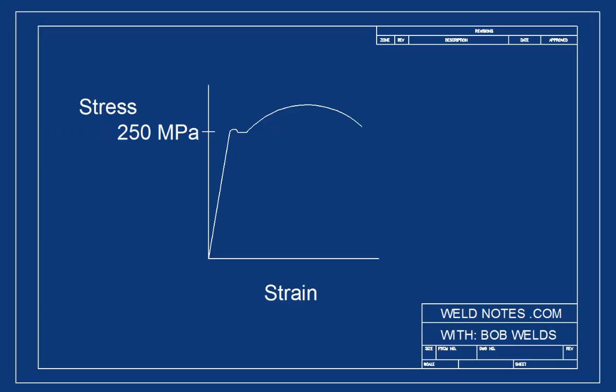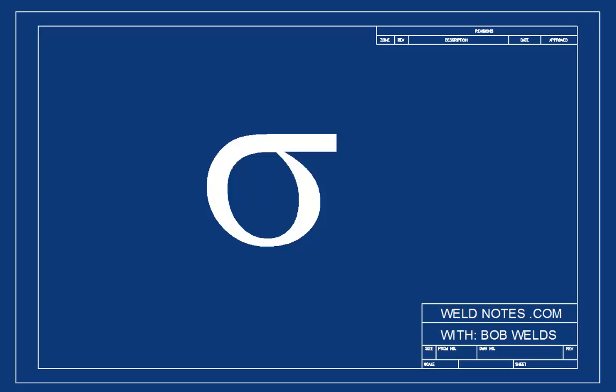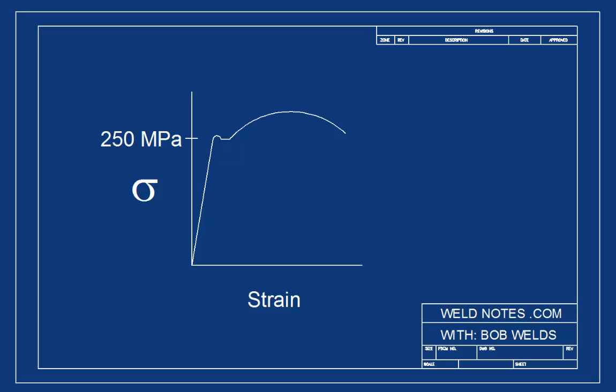Now since it's a lot of work to write the word stress over and over engineers use this lowercase sigma to mean stress. It's like a Greek letter S. I should probably tell you that there is usually this little E next to the sigma and that stands for engineering stress and here's what that's about.